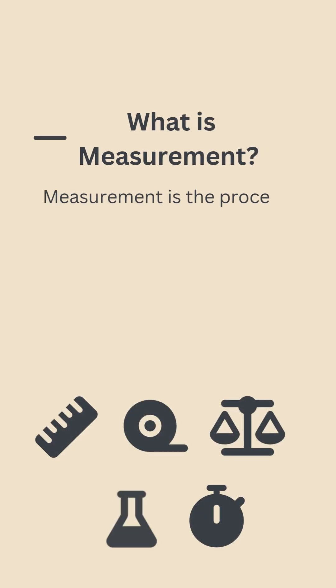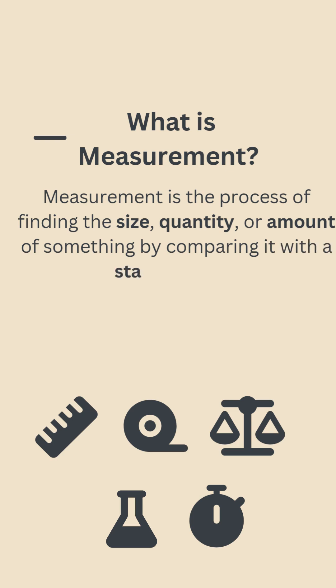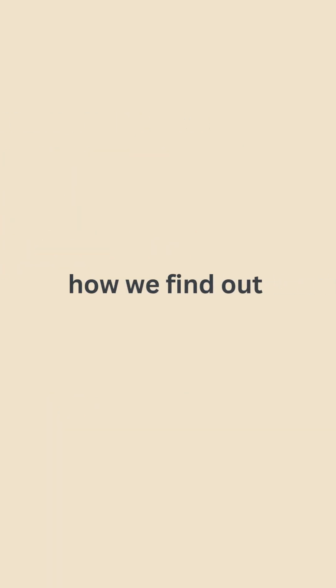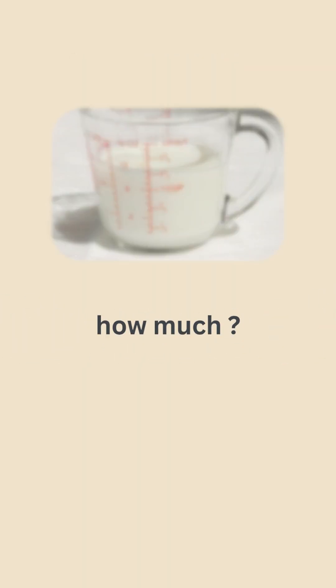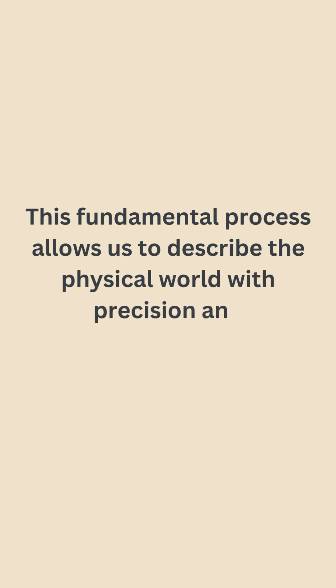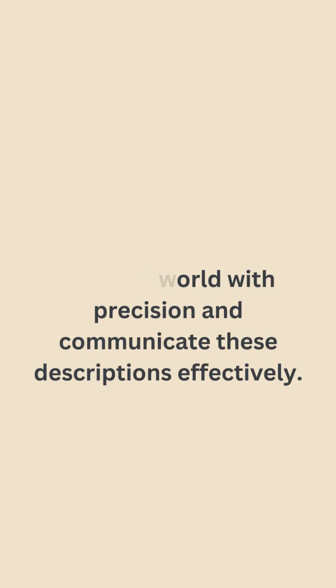What is measurement? Measurement is the process of finding the size, quantity, or amount of something by comparing it with a standard unit — how we find out how long, how heavy, or how much. This fundamental process allows us to describe the physical world with precision and communicate these descriptions effectively.